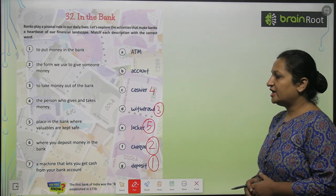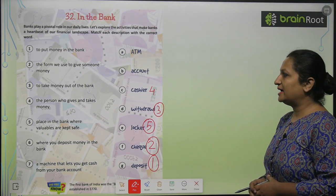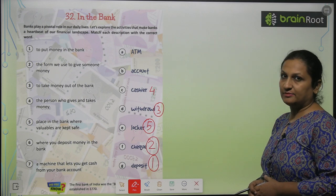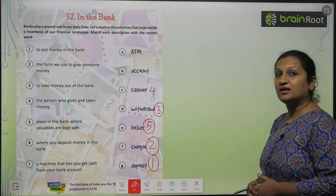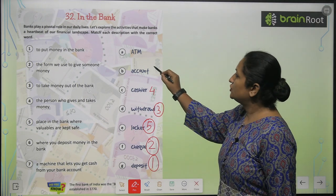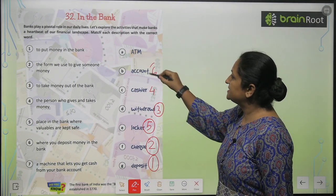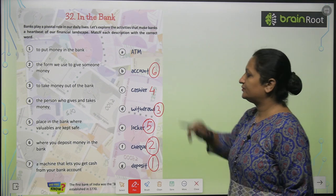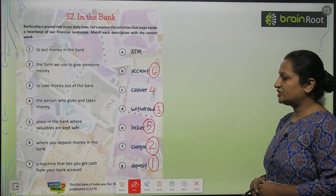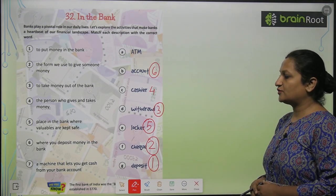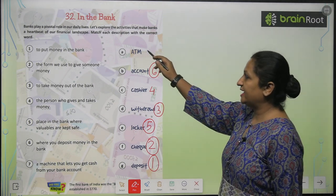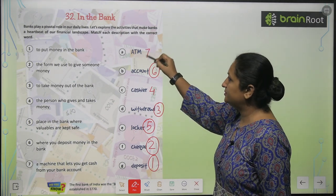Where you deposit money in the bank - hum kahaan pe deposit karte hai money? Hum apne account mein deposit karte hai. You will write six here. A machine that lets you get cash from your bank account - toh aisi machine ko hum bolte hai ATM.